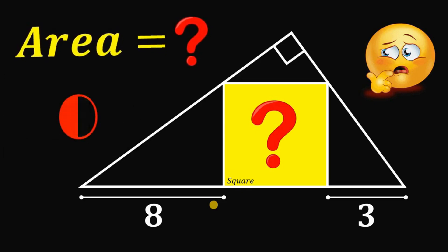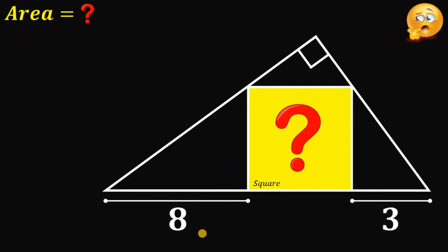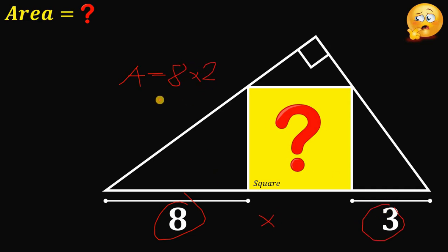Now let's answer this question together. Before the formal solution, here's the shortcut: in this kind of question, the area of this figure must be equal to eight multiplied by three, which is equal to 24 square units. And that is the answer.